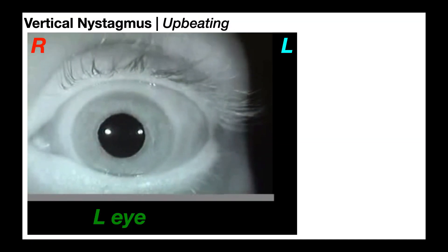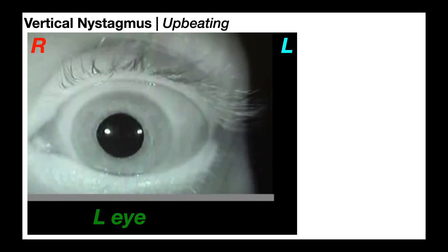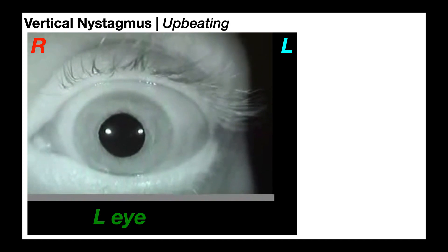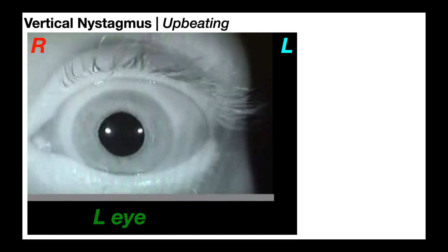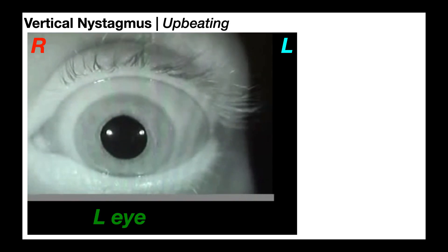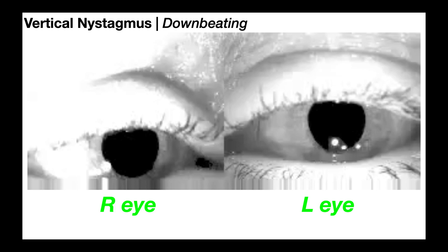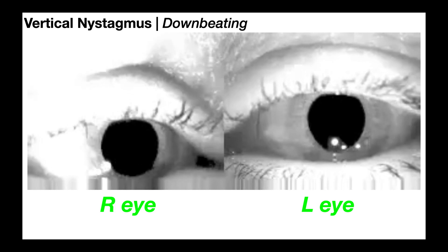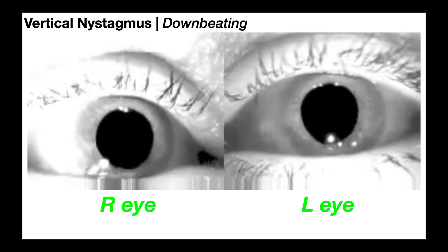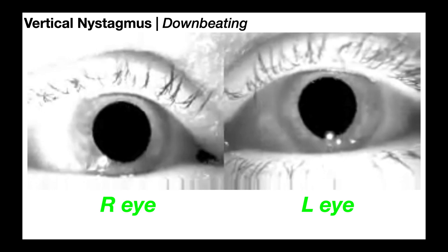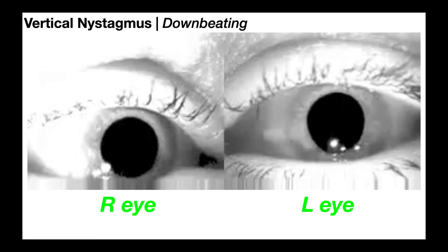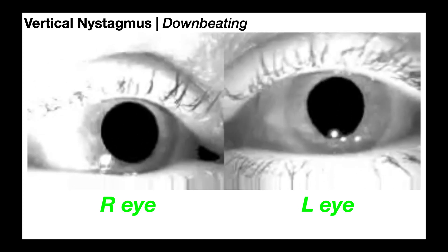Here's an example of vertical upbeating nystagmus that would implicate the posterior semicircular canal. And here's an example of vertical downbeating nystagmus that would implicate the anterior semicircular canal.